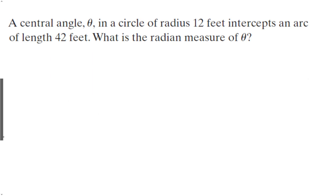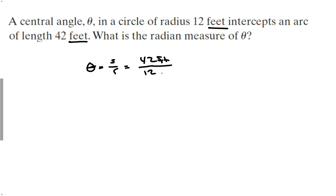One more example: a circle of radius 12 feet with a central angle theta. Theta equals S over R = 42 feet over 12 feet. The feet cancel, and we get 3.5 — or 3.5 radians. Write it out. If you don't have the degree sign, it means radians.